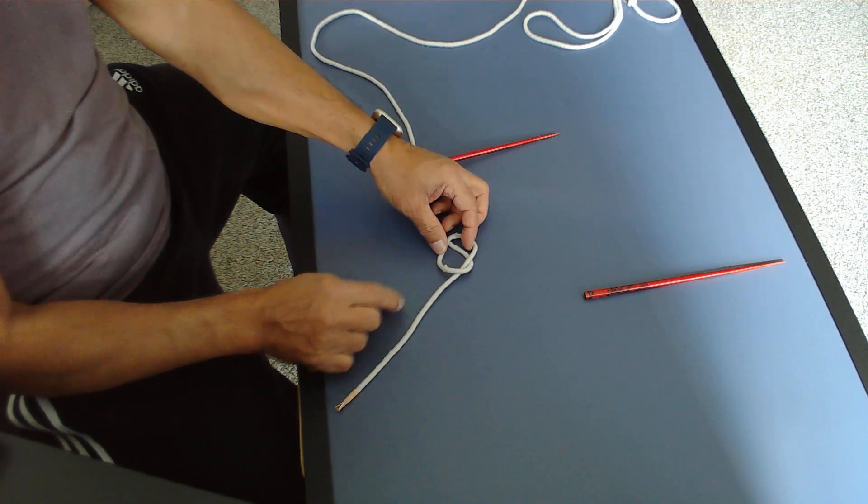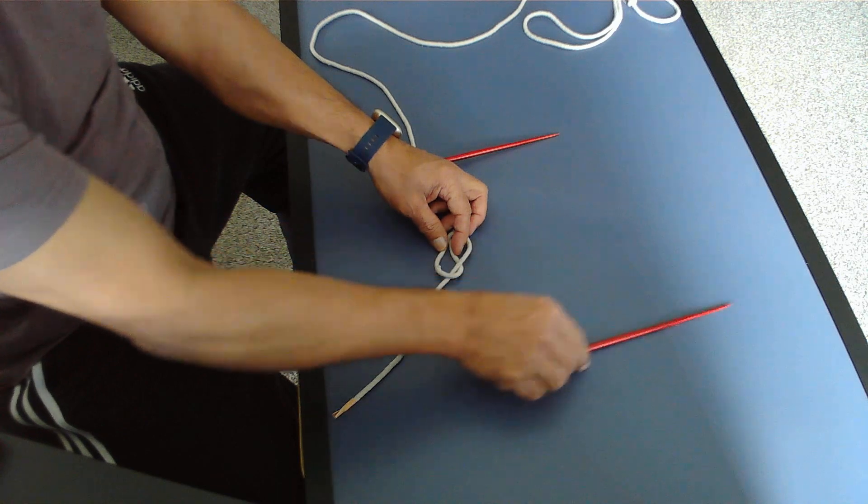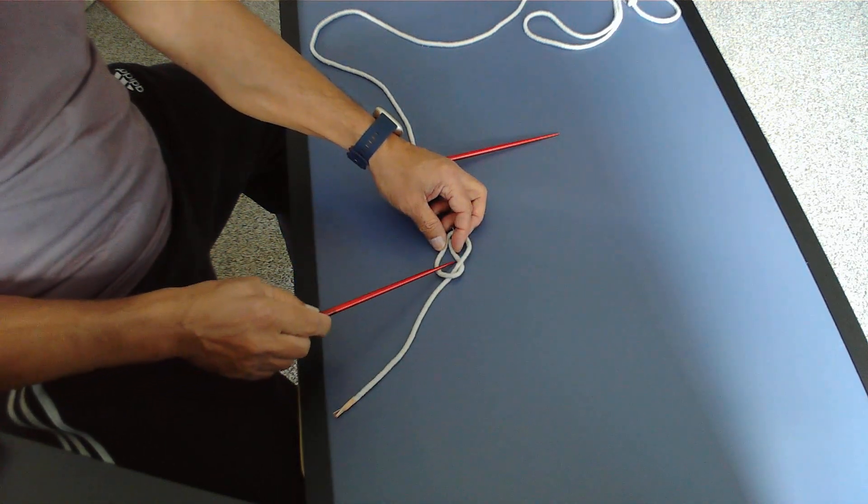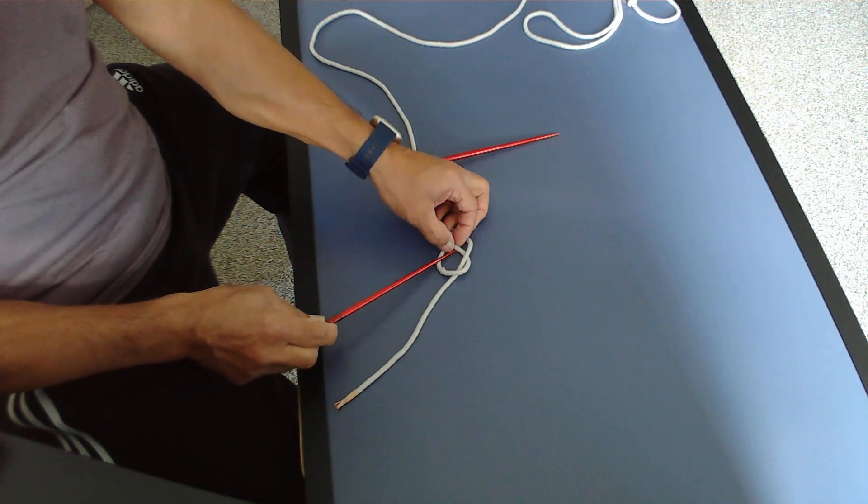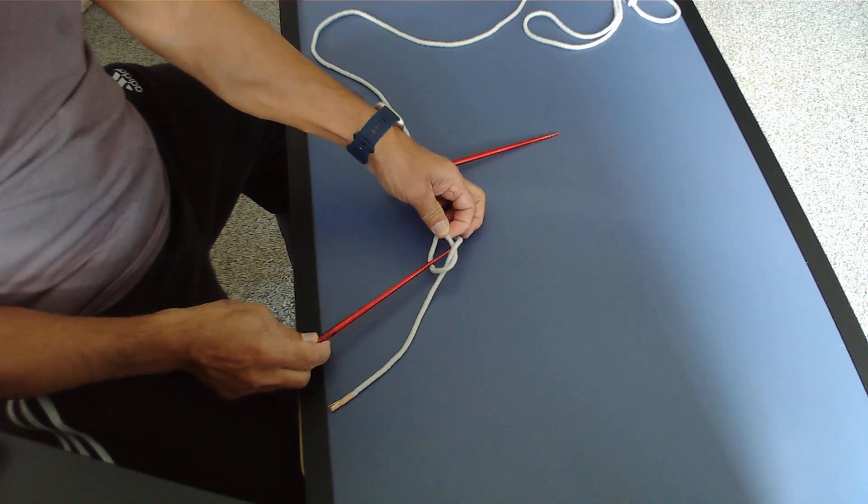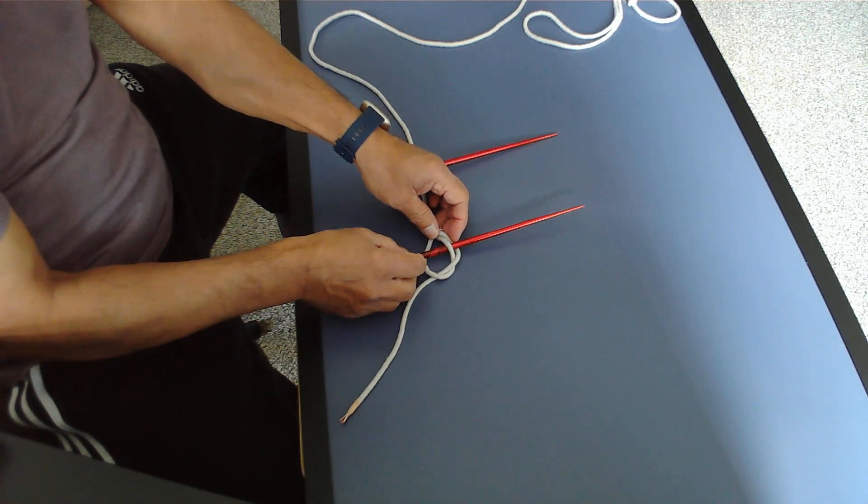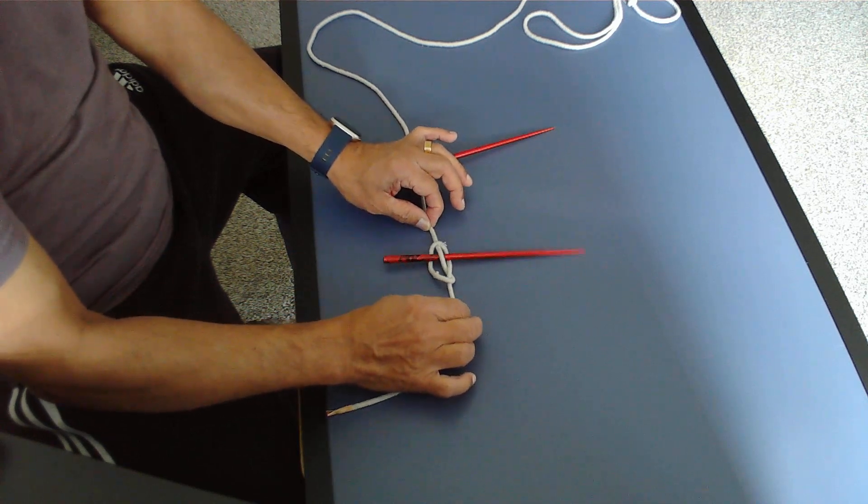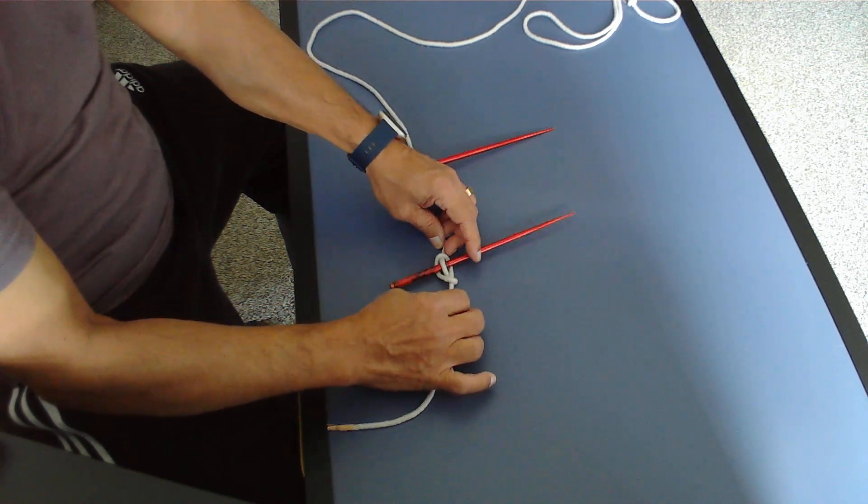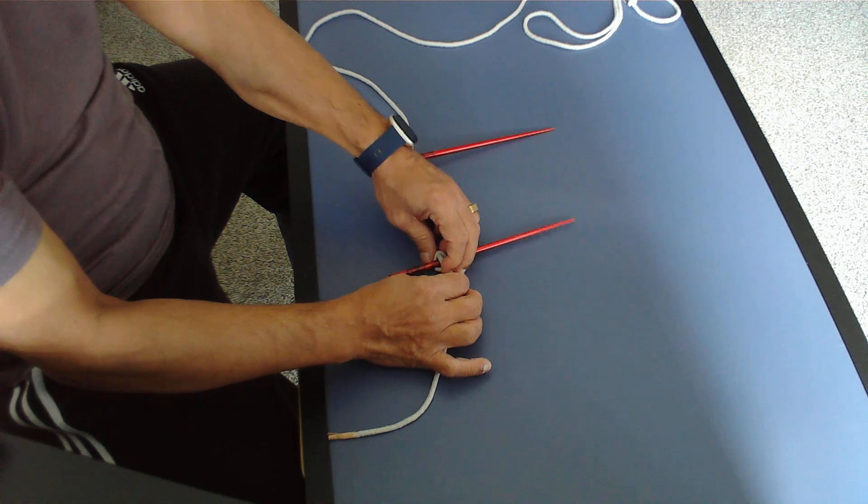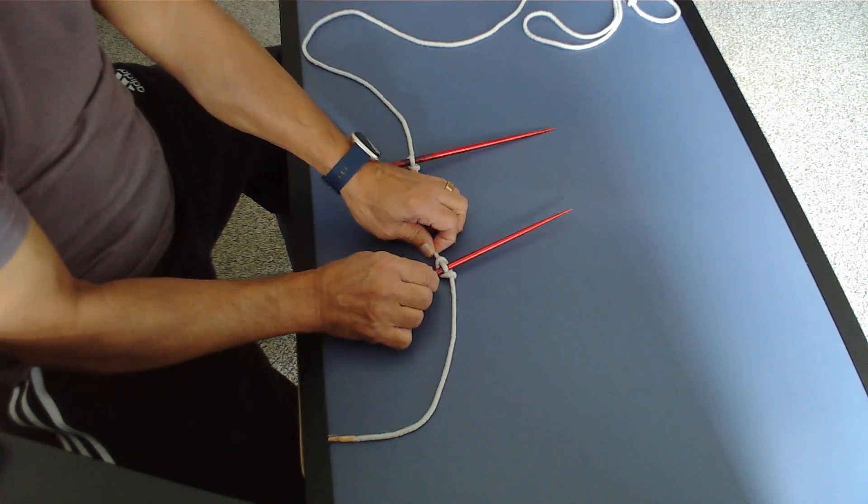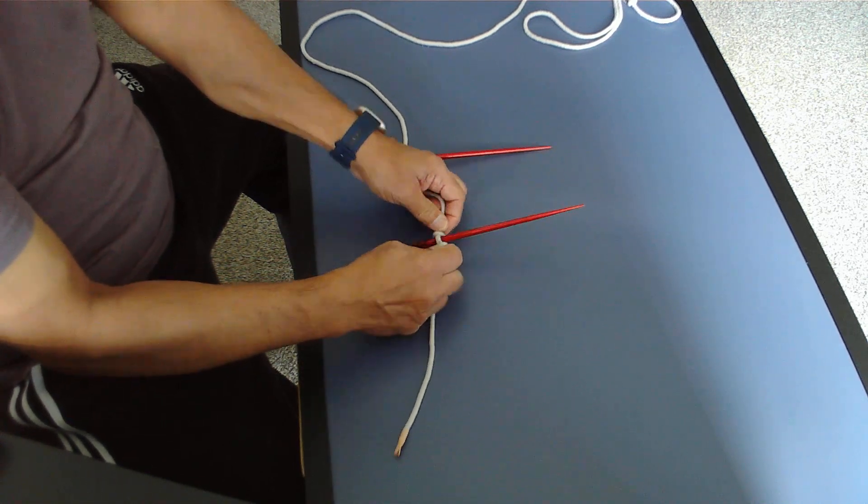Okay. So get my marlin spike and then pass it this way. Lift it up, pass it this way and take it out that way. And then I pull from these two ends. So pull a little and pull a little on this side.